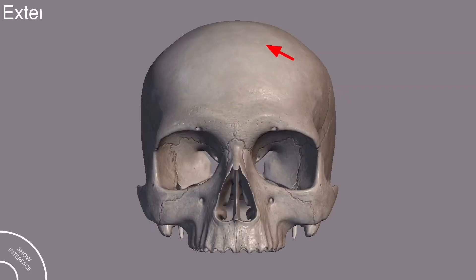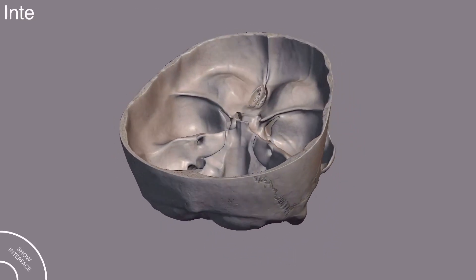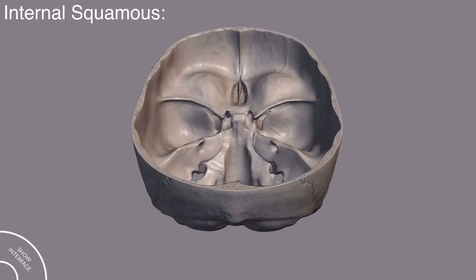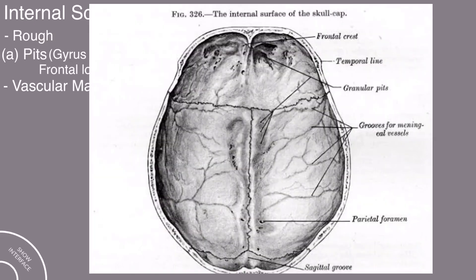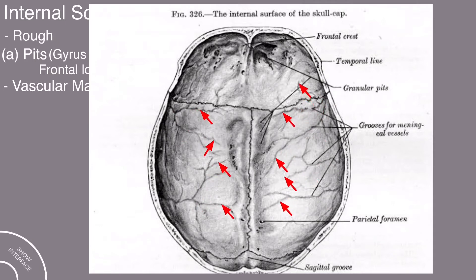The external squamous surface of the frontal bone is smooth, while the internal squamous surface of the frontal bone is rough, having pits. These pits are produced by the gyri of the frontal lobe. On the internal surface there are also visible vascular markings, which are produced by the meningeal vessels.